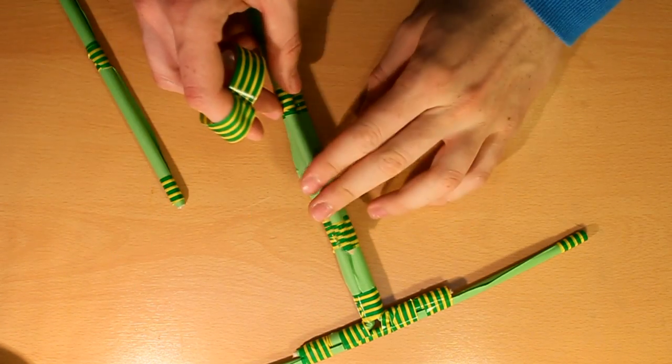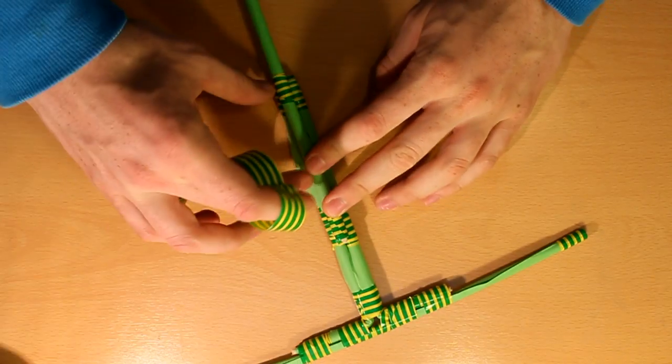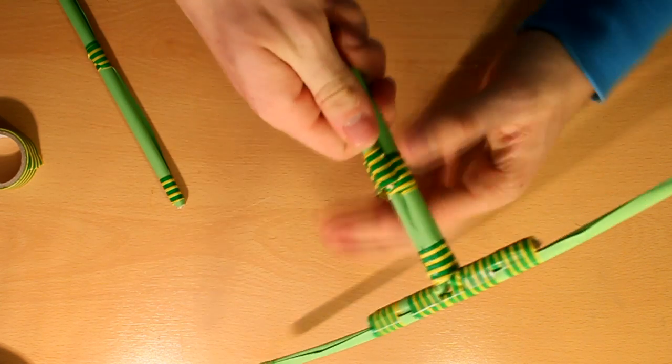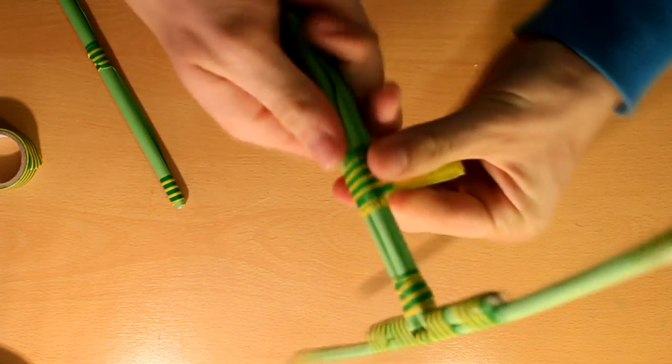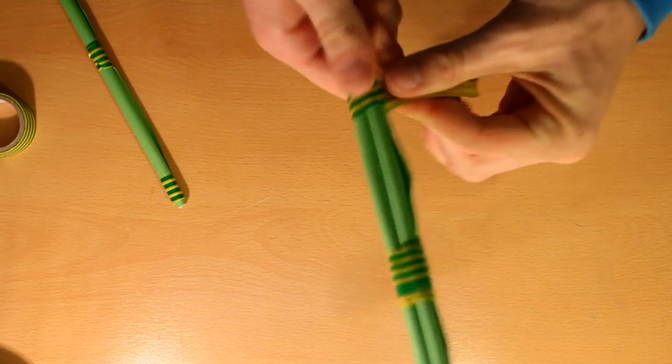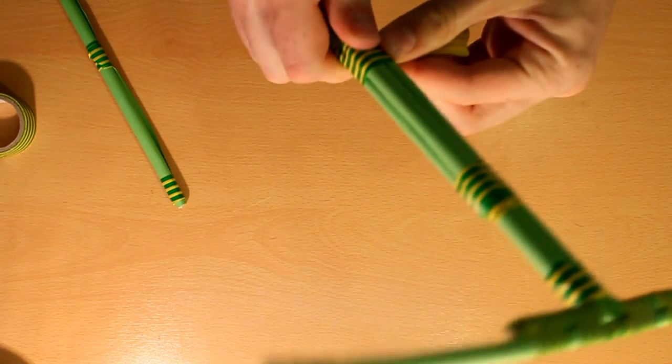After the bow is well taped, grab another stick, and as you see, tape it in the middle of the two sticks. Then tape it well.